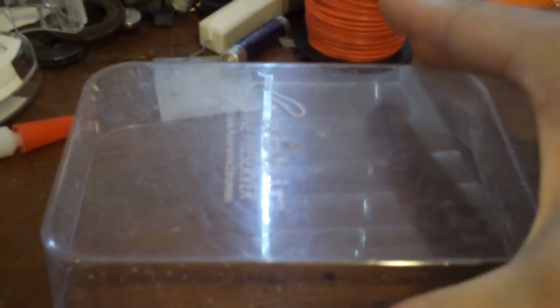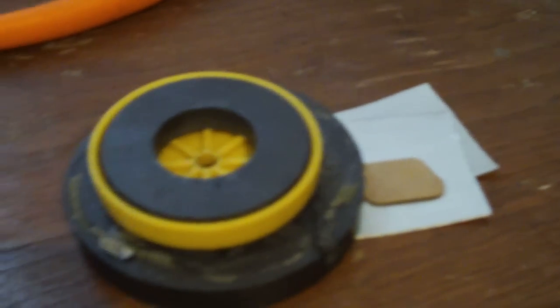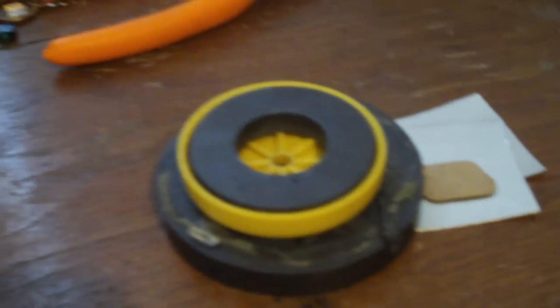This is just a plastic top I found to a piece of kitchenware. And these two are just donut magnets, two magnets I've stacked on top of each other. And those are shims to keep it level.